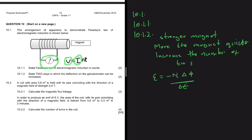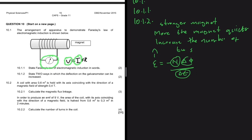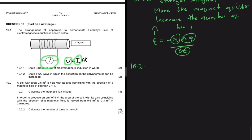If you move the magnet quicker inside the coil, you're reducing delta t, and as a consequence EMF increases. If you increase the number of turns N, EMF increases. And if you use a stronger magnet, you'll have a greater change in magnetic flux linkage. Now we can go to question 10.2.